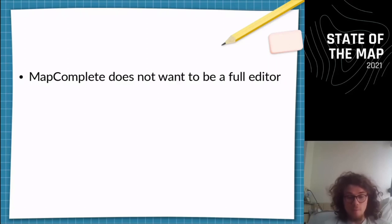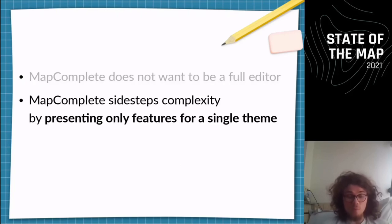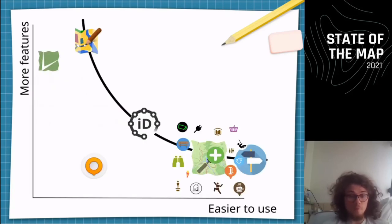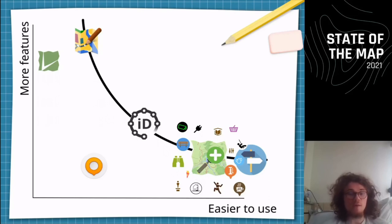At the moment a contributor complains, 'I want to edit five points at the same time,' or 'I want to modify geometry or relations,' that is the point where I say: you've outgrown MapComplete — please switch to the iD editor or JOSM. Another way of sidestepping complexity is by not showing every feature at once. I only show features which are interesting to a single group of people, which reduces complexity. If you only care about artworks, you'll only see artworks. So MapComplete can be placed on that graph somewhere between StreetComplete and iD, depending on the theme.